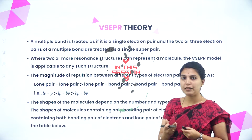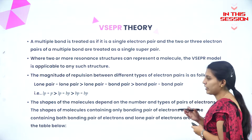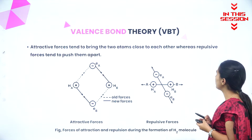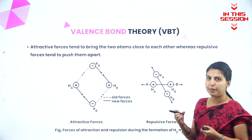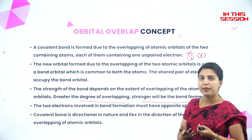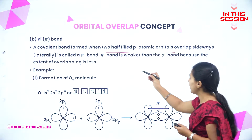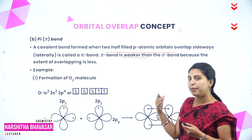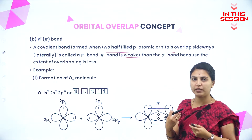A multiple bond means two or three bonds will be present and is treated as a single electron pair. Attractive forces tend to bring the two atoms close to each other whereas repulsive forces tend to push them apart to get maximum overlap. When maximum overlap is achieved, the bond gets much stronger. Pi bond is weaker than sigma bond because the extent of overlap is less.